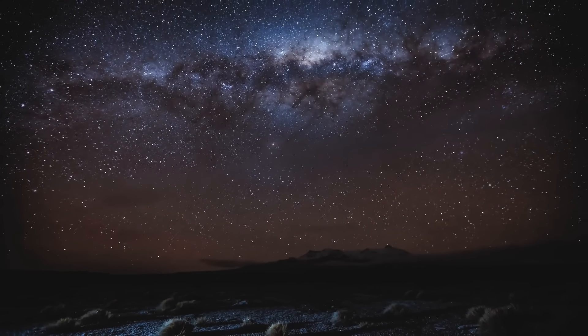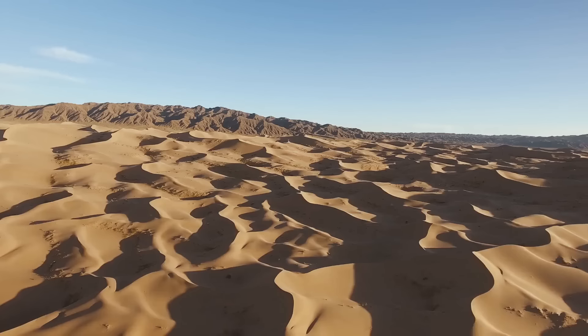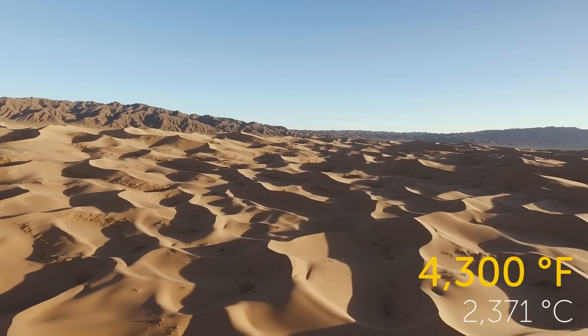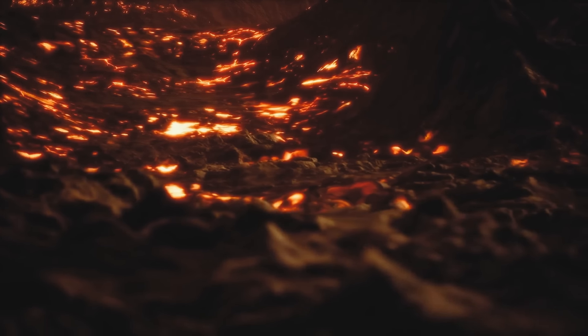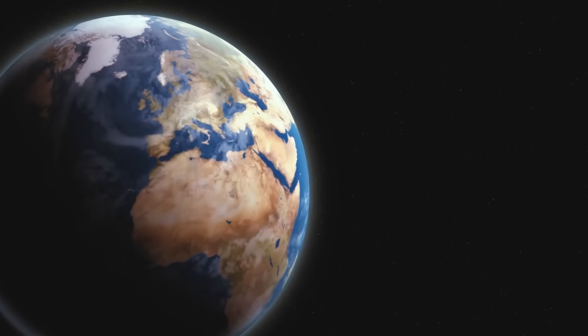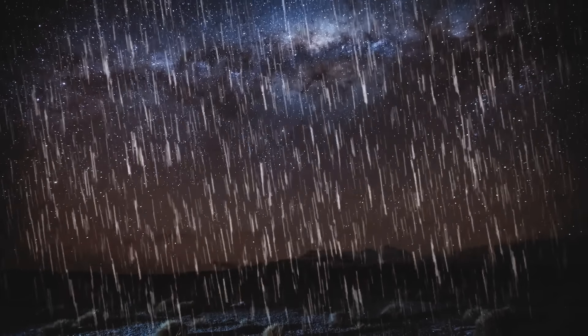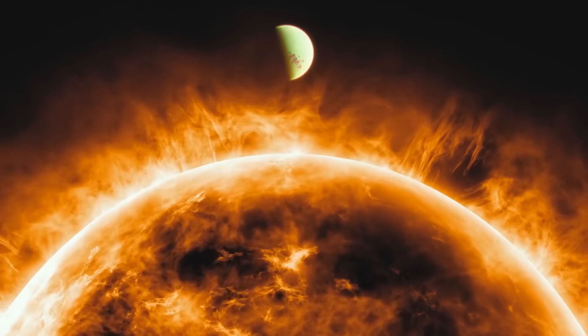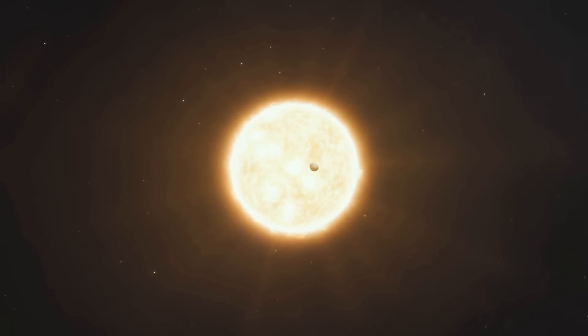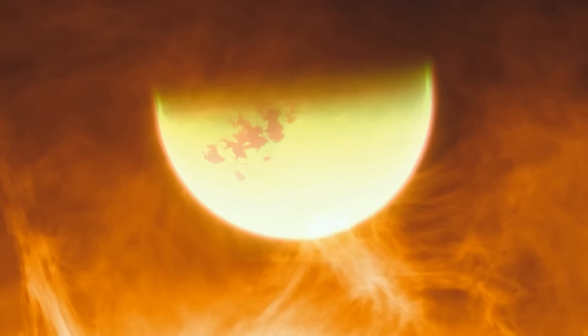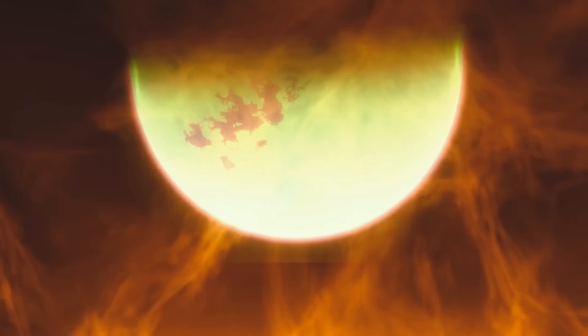On WASP-76b, it rains iron on the night side of the planet, and the temperature on the daytime side rises up to 4,300 degrees Fahrenheit. That's hot enough to vaporize most metals. This exoplanet is a bit smaller than Jupiter and located 640 light-years away from Earth. Such terrifying weather conditions in this world are caused by its unusual orbit. The distance between WASP-76b and its parent star is 10 times shorter than the distance between Mercury and the Sun. That's why the star and the huge planet are tidally locked. One side of WASP-76b always faces the star, and the other side is always pitch black.